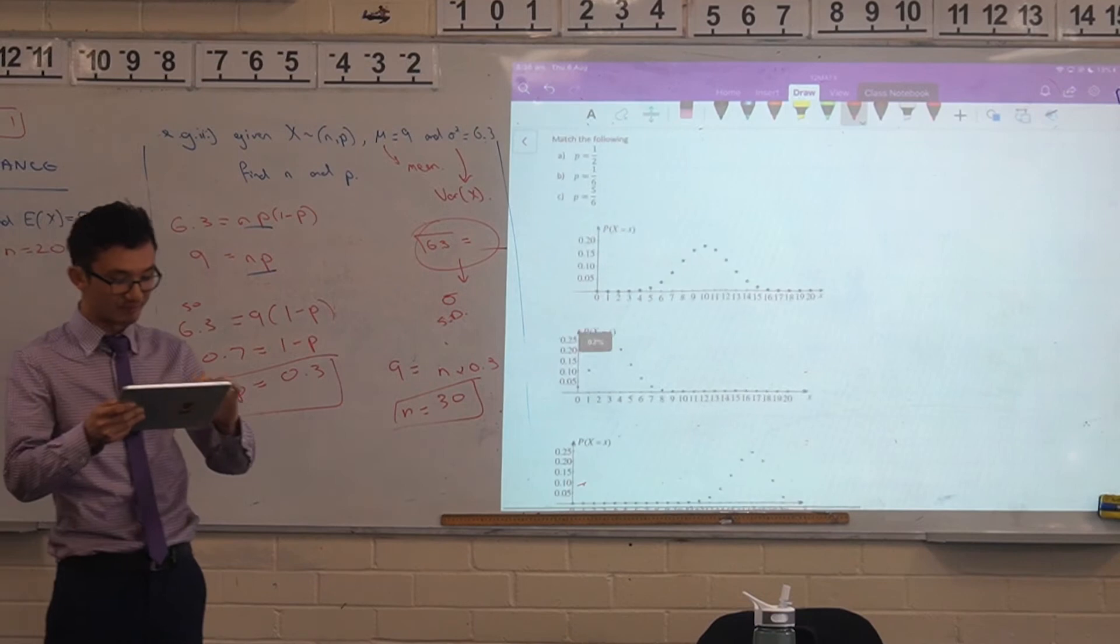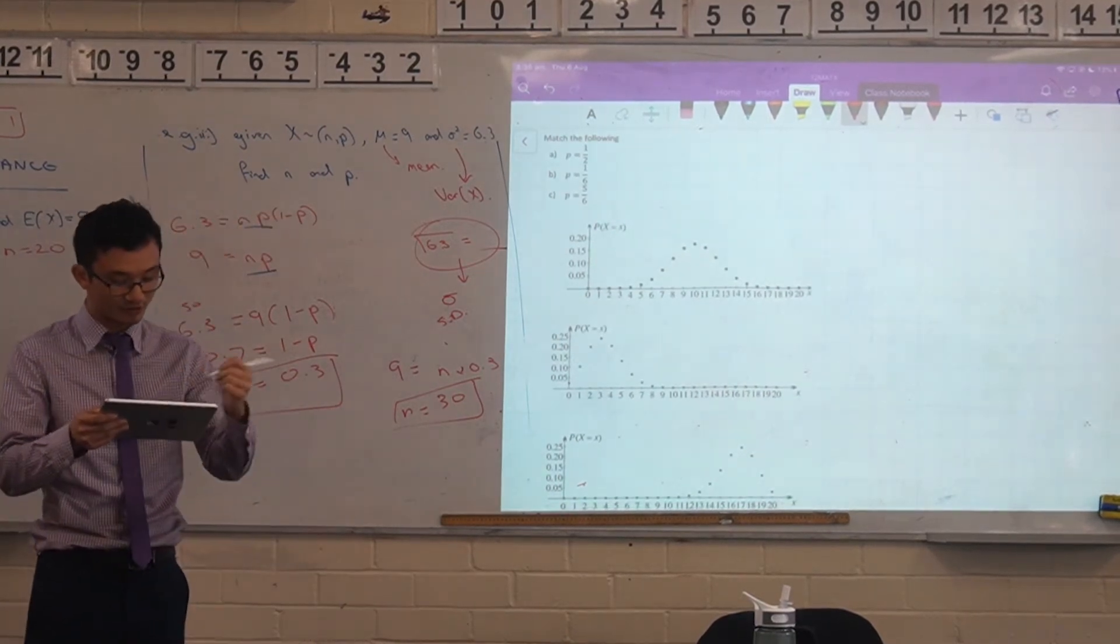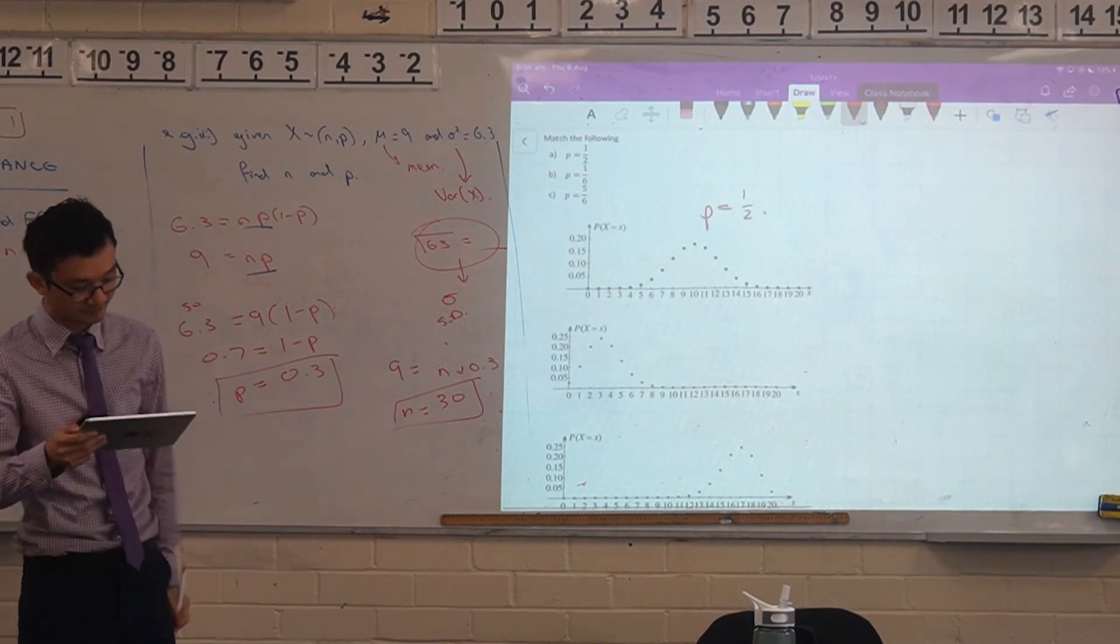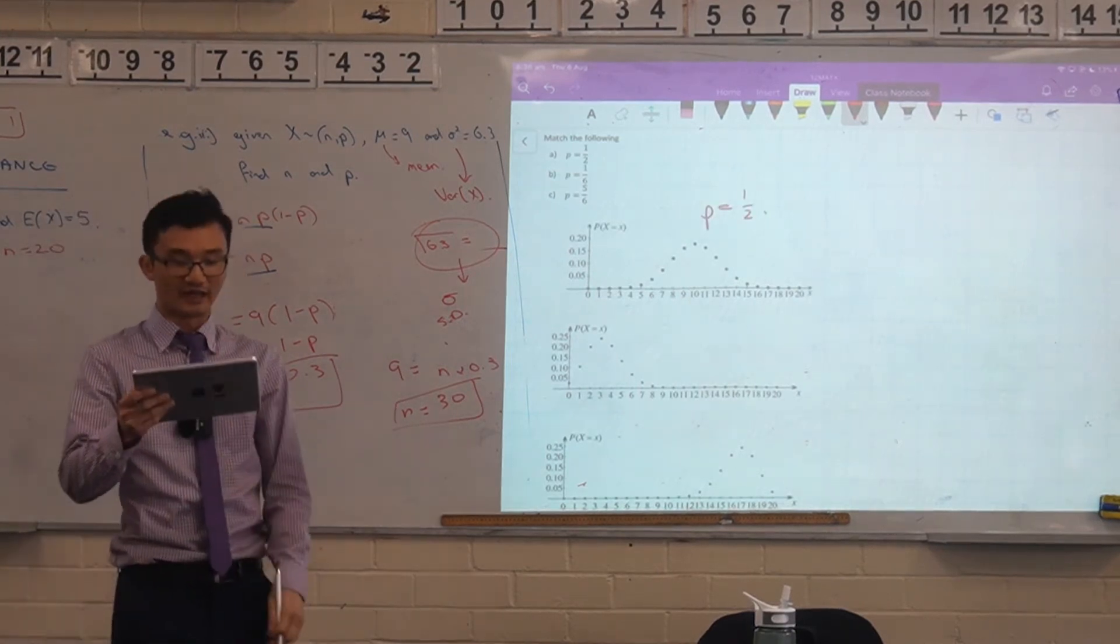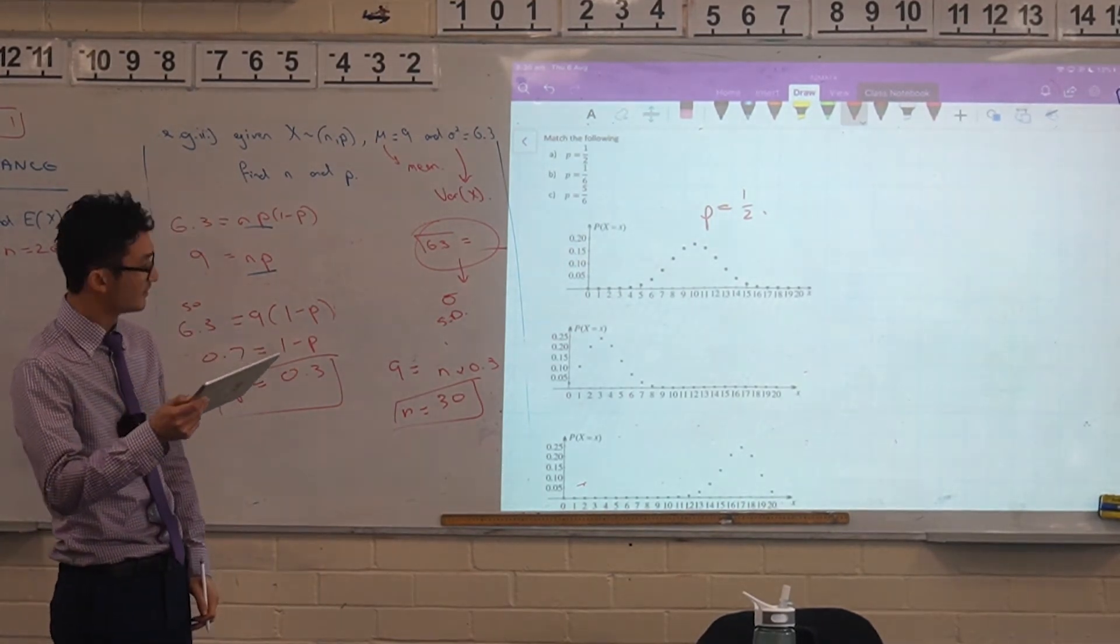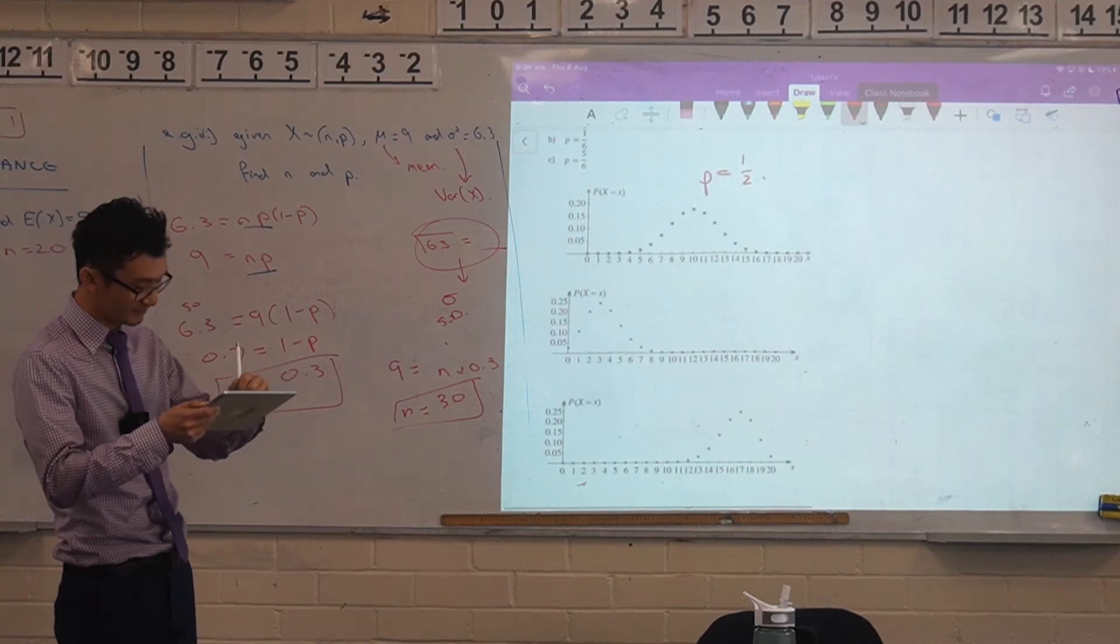So here you might want to match the probability. They might ask you to match them. So the symmetrical one's really easy to identify, right? So that would be just P is equal to half. Angus, what do you reckon about one on six? Which one would that match up with? The second one. The second one? Yep.